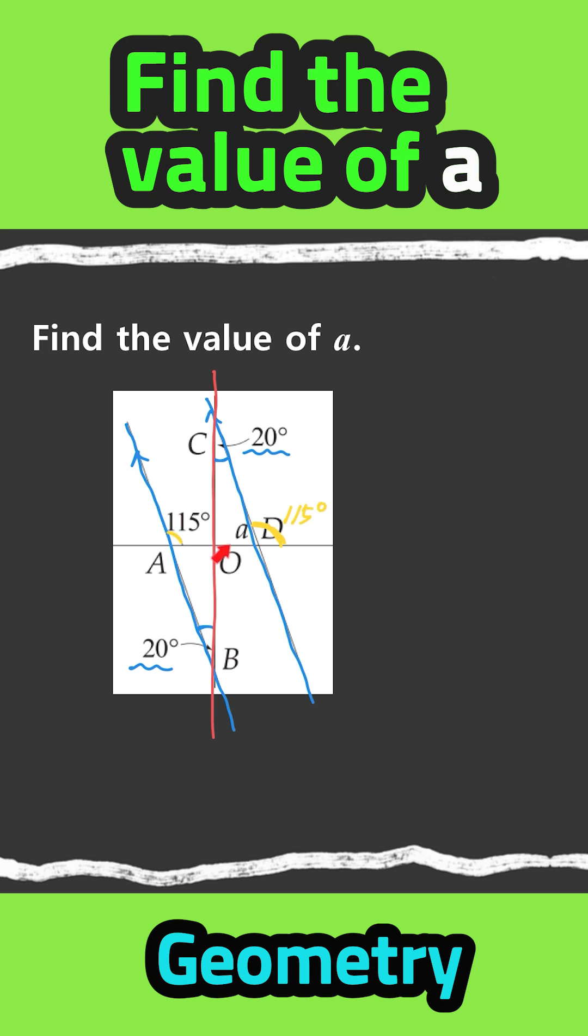So if we look at this straight line right here, a plus 115 is equal to 180, because that's the straight angles. So a plus 115 is equal to 180. So what is the value of a?